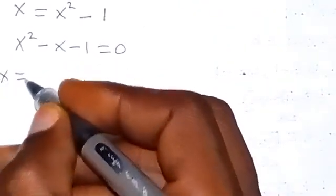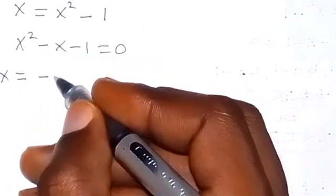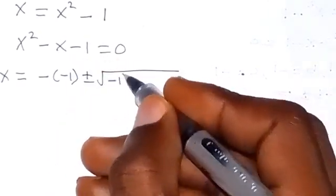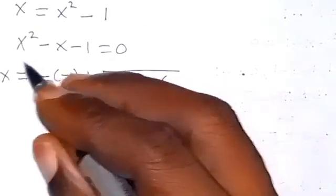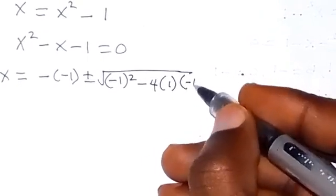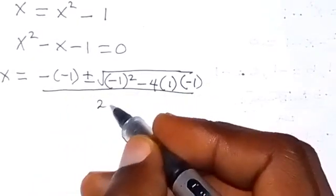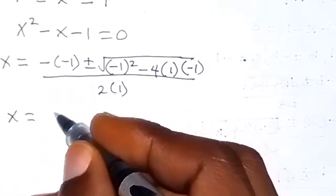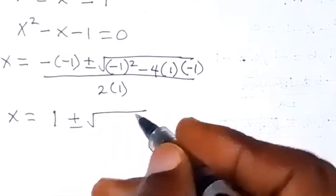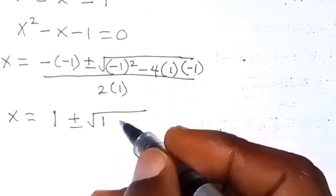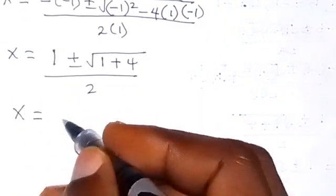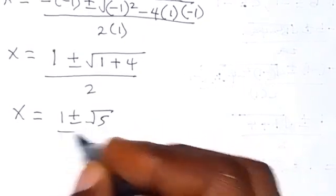We can solve this quadratic equation using the quadratic formula. x equals minus b, where b is minus 1, so that's plus 1, plus or minus the square root of b squared minus 4ac. Here a equals 1, b equals minus 1, c equals minus 1. So we get x equals 1 plus or minus the square root of (1 plus 4), all over 2, which gives x equals 1 plus or minus root 5, over 2.